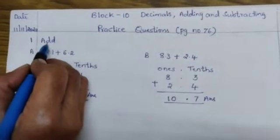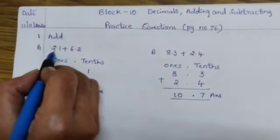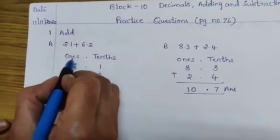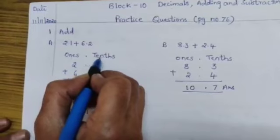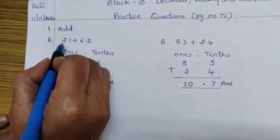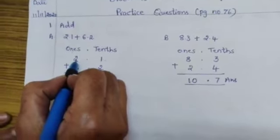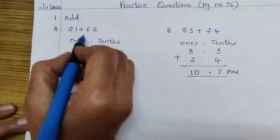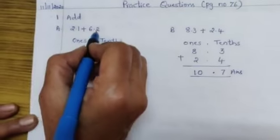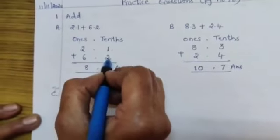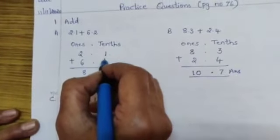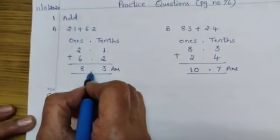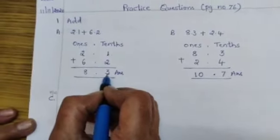First question add, a bit 2.1 plus 6.2. Once, point, decimal point, tenths. In 1's place, 2 is there, so in 1's place write 2. 1 is in tenths place. 6 is in 1's place, 2 is in tenths place. Now add, 1 plus 2 is 3, 2 plus 6 is 8. So answer is 8.3.